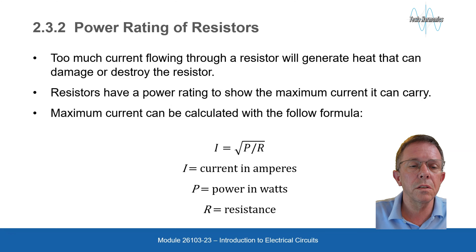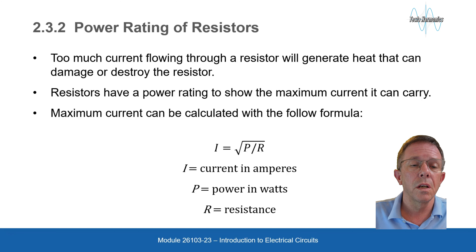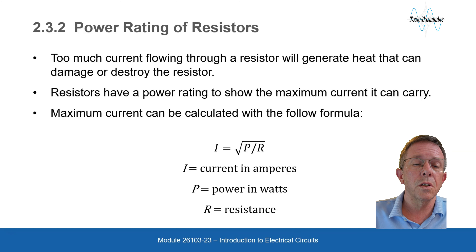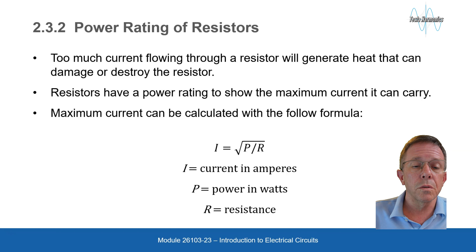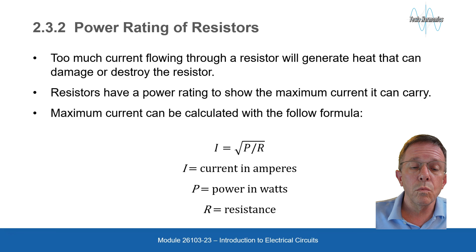Power rating of resistors: too much current flowing through a resistor will generate heat that can damage or destroy the resistor. Resistors have a power rating to show the maximum current they can carry. Maximum current can be calculated with the formula: I equals P divided by R squared, where I equals current in amperes, P equals power in watts, and R equals resistance.